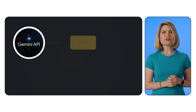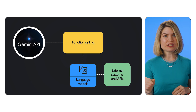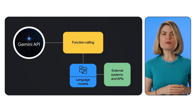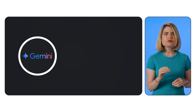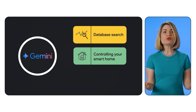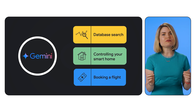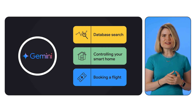Hi everyone, welcome back. Today we're going to be exploring a powerful feature of the Gemini API called function calling. This lets you connect your language models with external systems and APIs, opening up a whole new world of possibilities. Think of it like this — you can teach Gemini to use tools like searching a database, controlling your smart home, or even booking a flight, all through natural language. Let's get started.